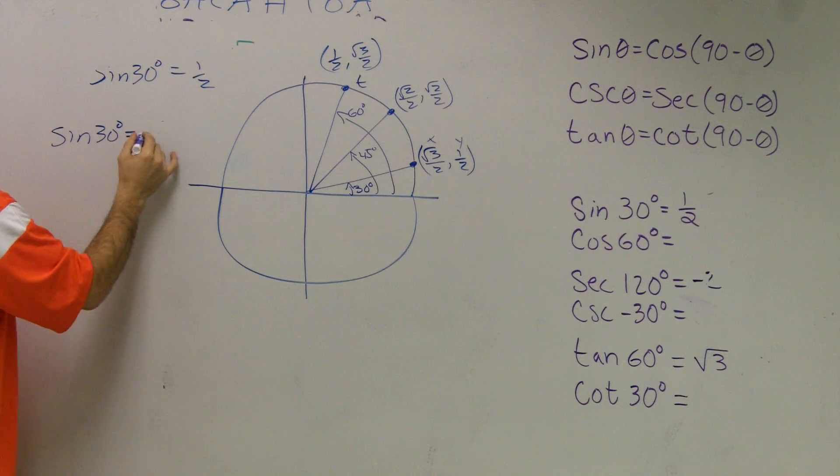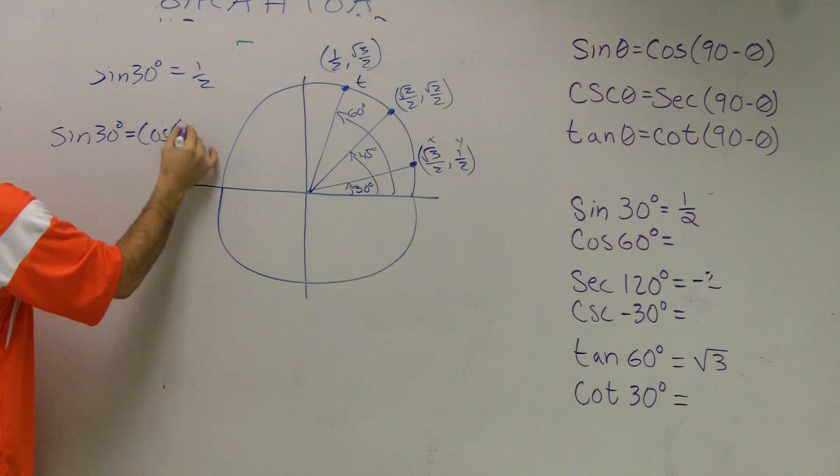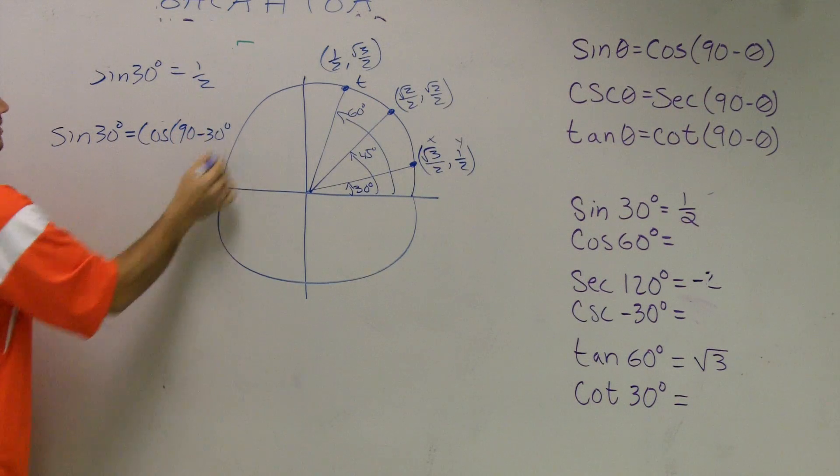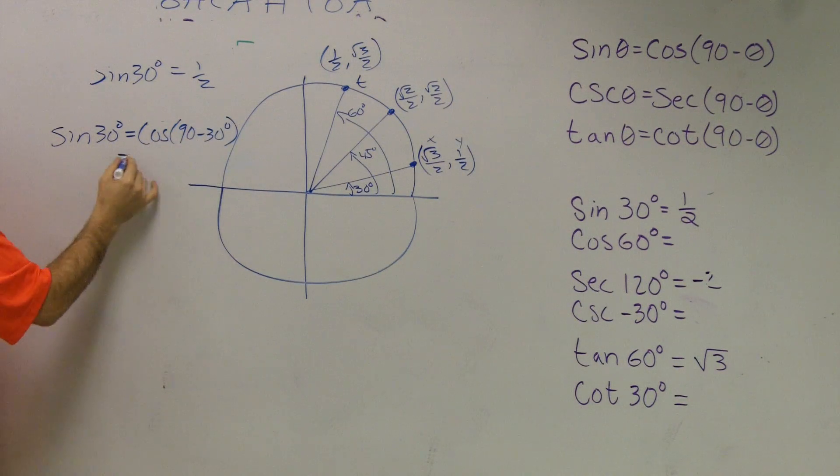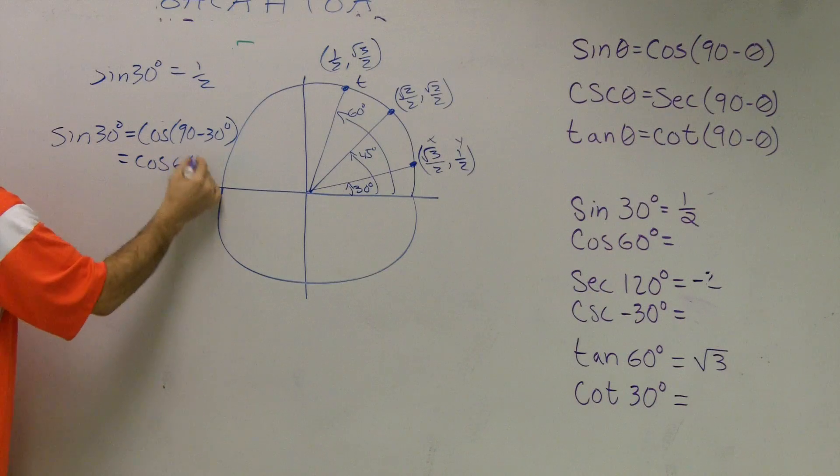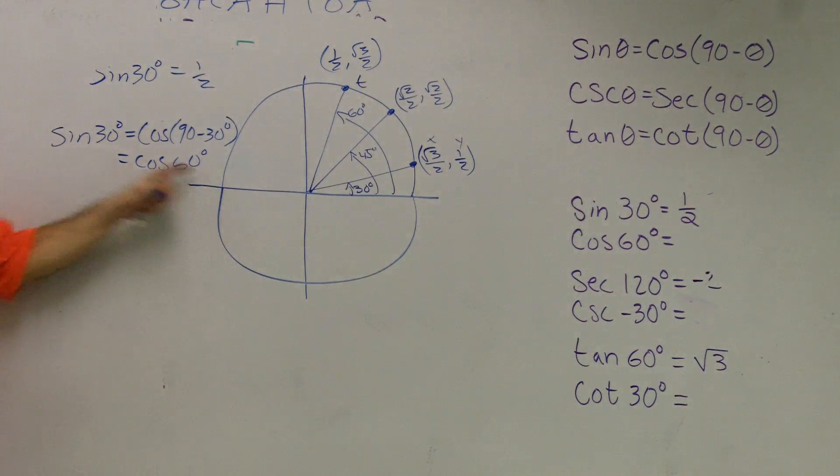that's the same thing as cosine of 90 minus 30. What's 90 minus 30? 60. So, I'm saying cosine of 60 degrees is equal to sine of 30 degrees. Let's see if that's true.